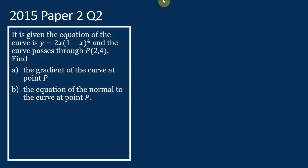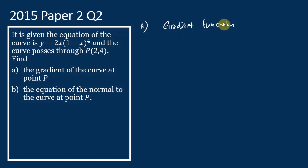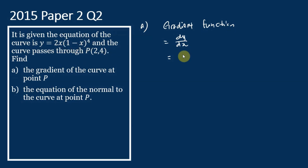Let's start with part (a). The gradient function is equal to dy/dx. So let's differentiate y. This is a multiplication of two expressions, so we use the product rule. To use the product rule, first we copy (1 - x)^4 and multiply by the derivative of 2x. The derivative of 2x is equal to 2.